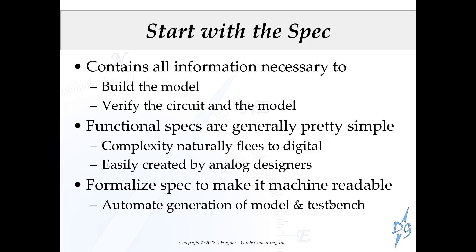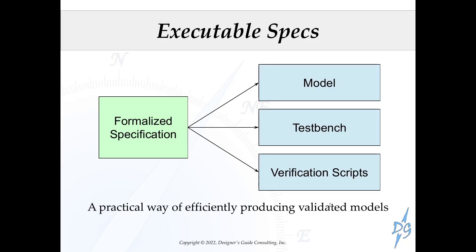In specification-driven verification, we start with the spec. The spec contains all the necessary information to build the model and to verify that the circuit and the model are equivalent. Functional specs for analog blocks are generally pretty simple—the complexity naturally flees to digital. Analog typically doesn't contain state, nor does it contain a lot of logic. The functional specs can be easily created by the analog designer. We then formalize the spec to make it machine readable, which allows for automatic generation of the model and the test bench. Our flow takes a formalized specification—an executable spec—and turns it into a model, a test bench, and verification scripts automatically. It's a practical way of efficiently producing validated models.